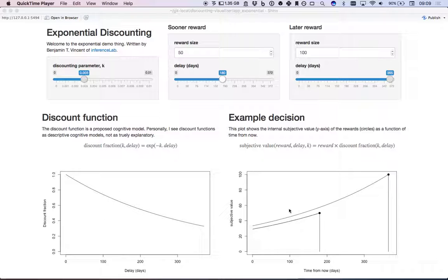And so this allows us to make predictions about what people would choose. So in this particular example, at all points in time, if someone was discounting according to this discount function, they would always choose the delayed reward. You should have a look at some of the other videos where I show how to change these things and the other kind of predicted choices that people might make.